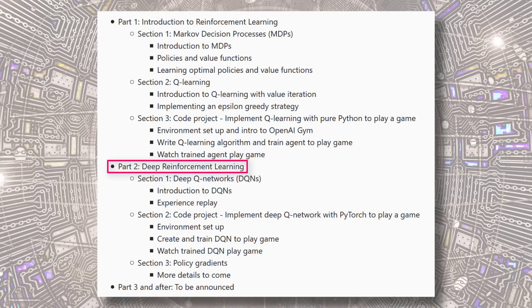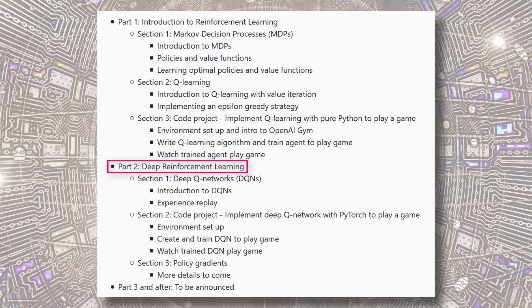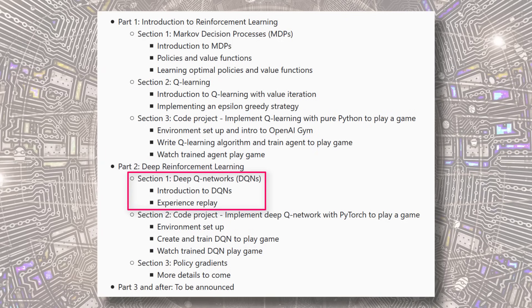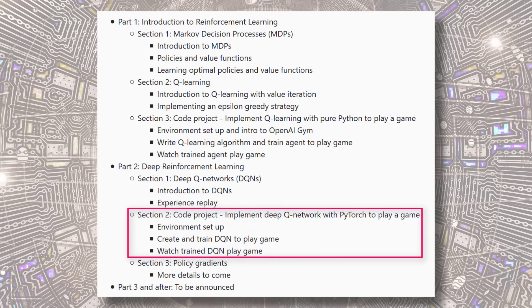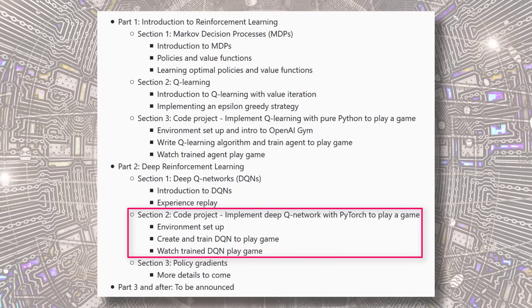Part 2 of the series is where we'll focus on deep reinforcement learning. Here, we'll learn about deep Q-networks, and then in our second code project, we'll implement our very own deep Q-network with PyTorch that will learn to play a game.